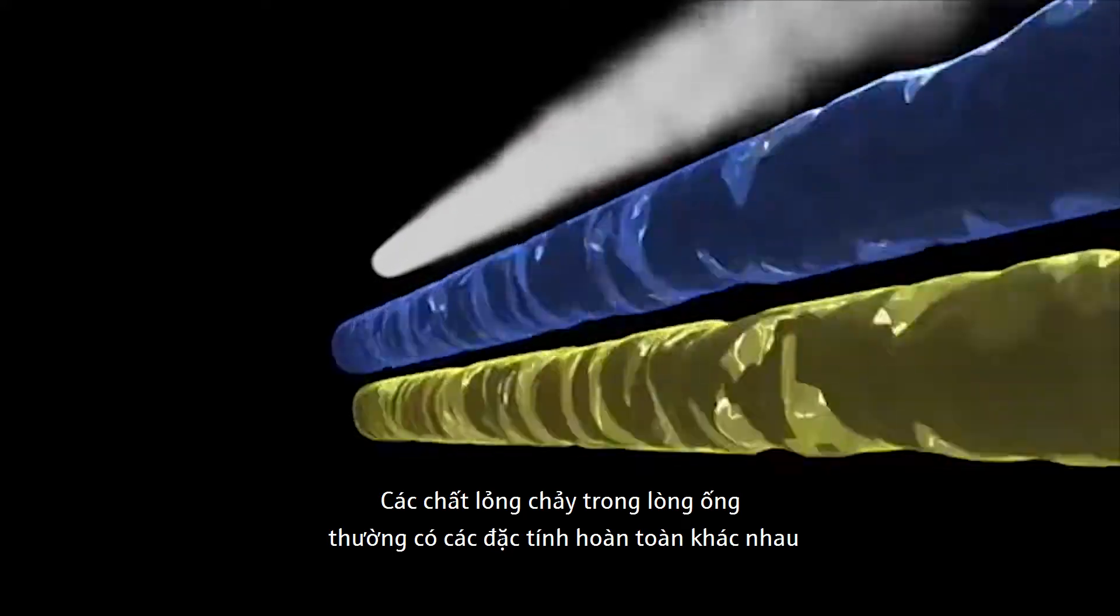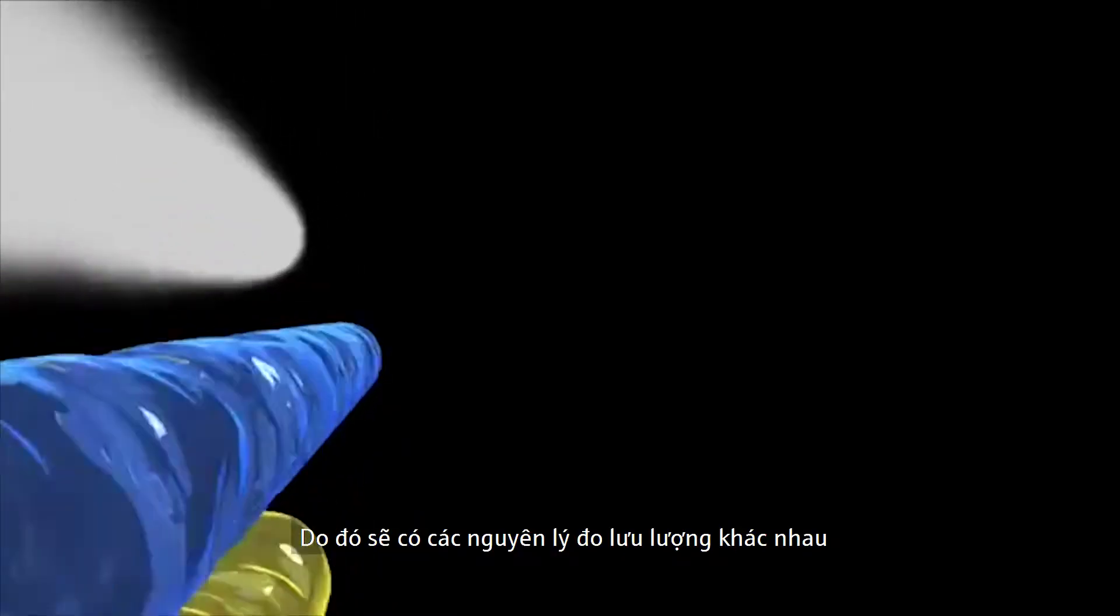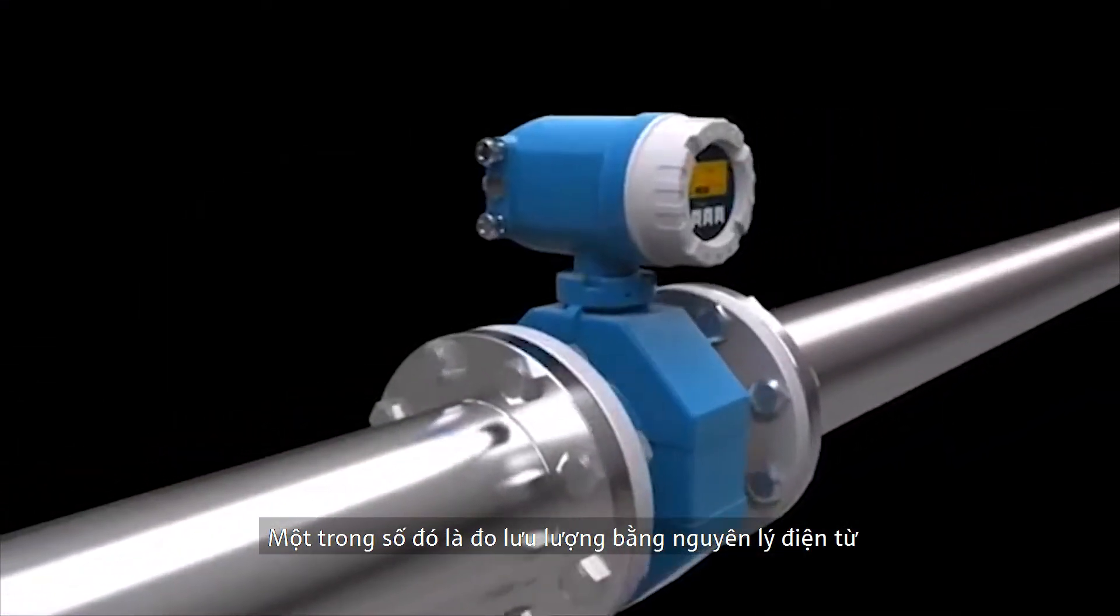The fluids flowing through pipes often have completely different properties. Consequently, there are different principles for their measurement. One method is flow measurement based on the electromagnetic principle.